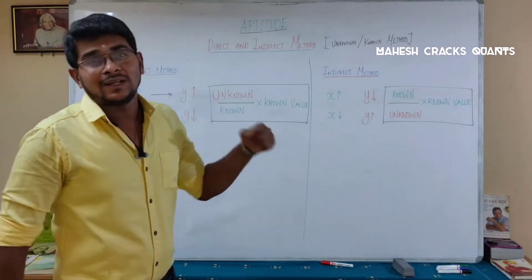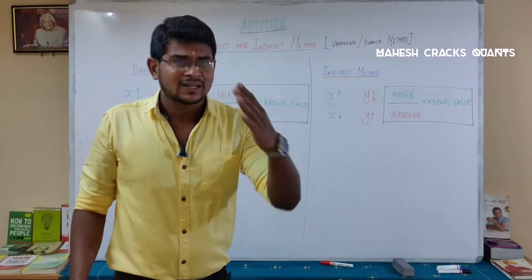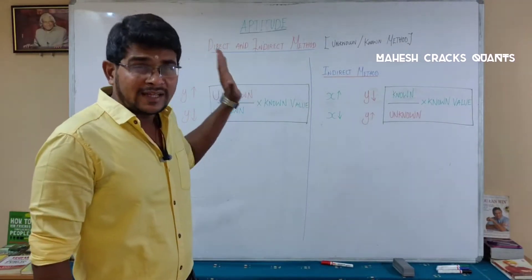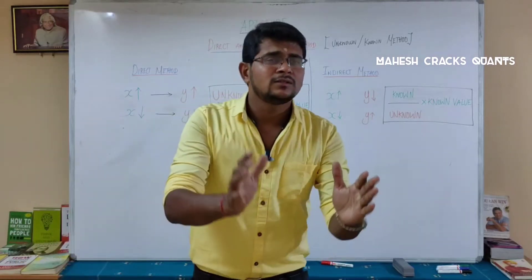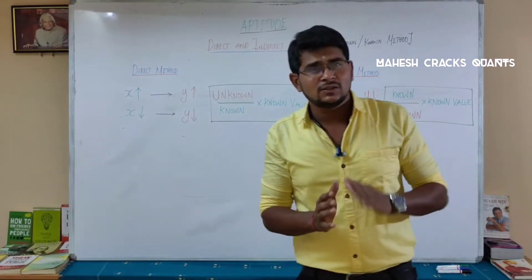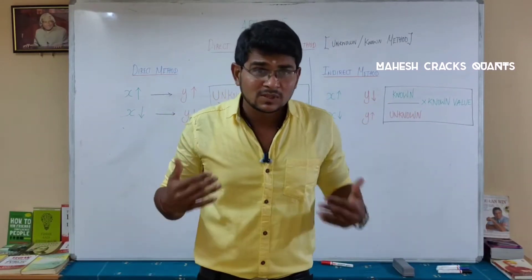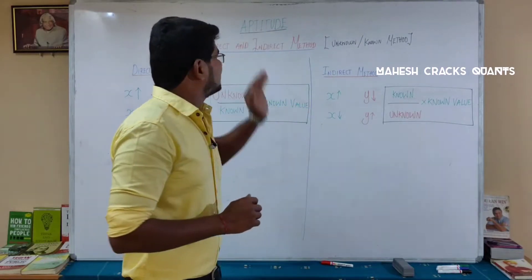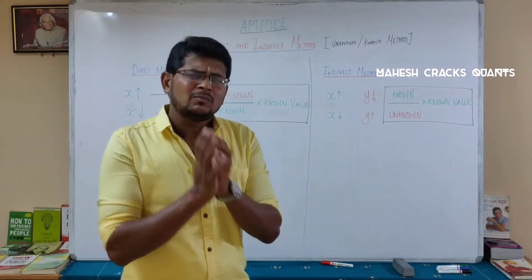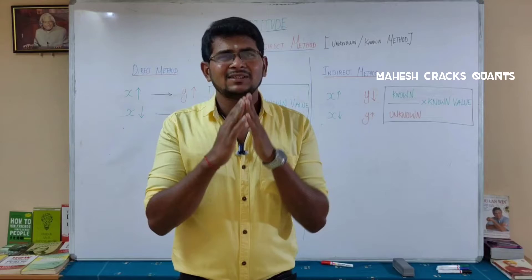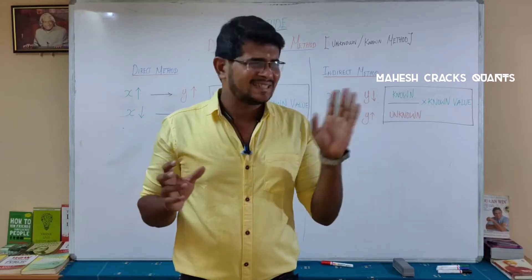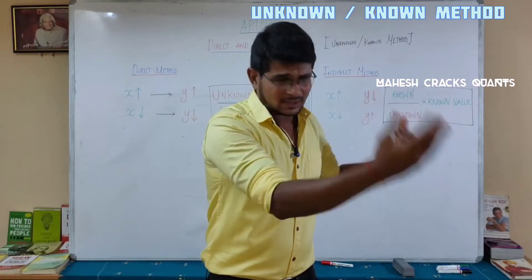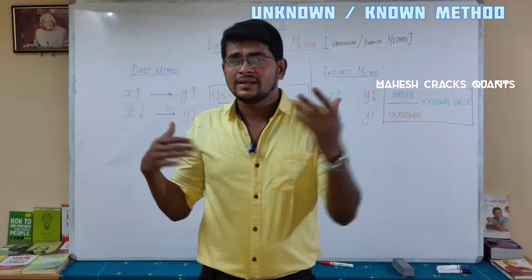Let's get started. At the beginning, we are going to look at the direct and indirect method. This is the method we need to solve around 60% of the problems in aptitude. Basically, maths is divided into two parts: direct proportion and indirect proportion.